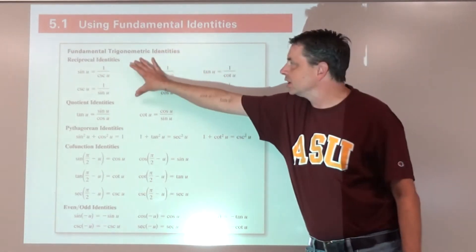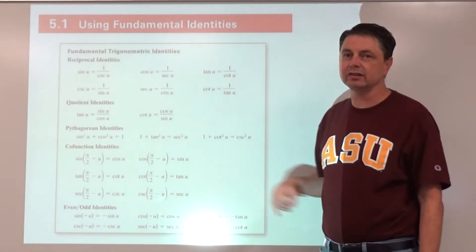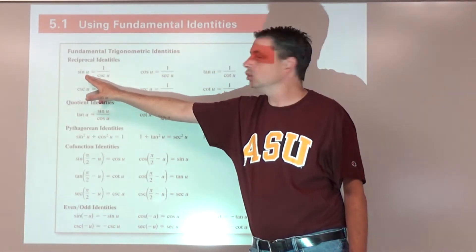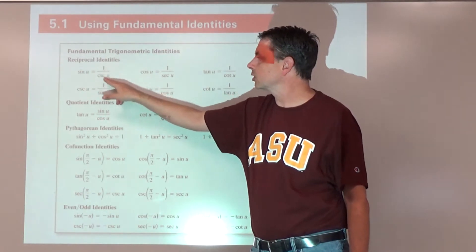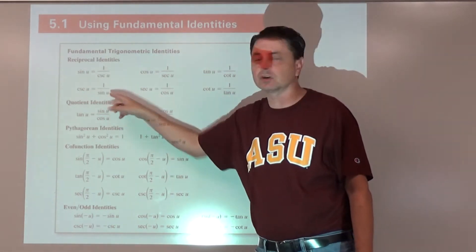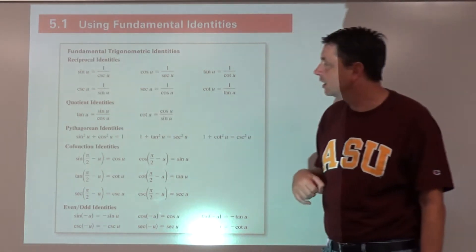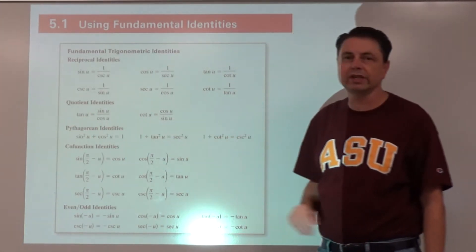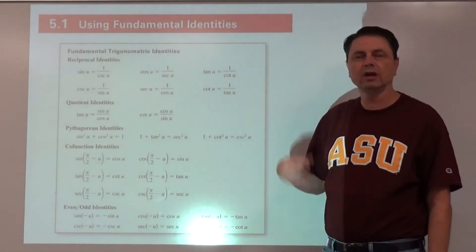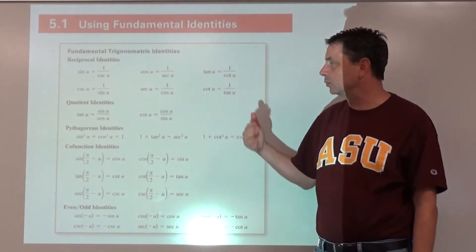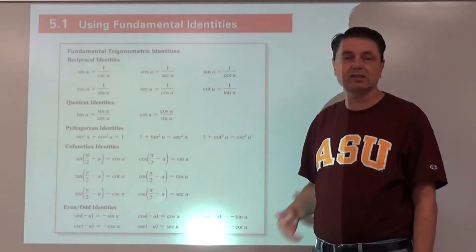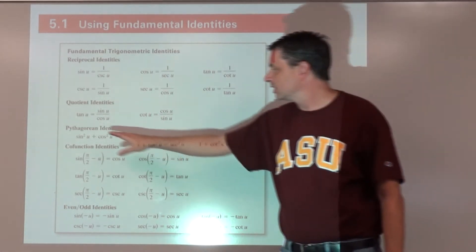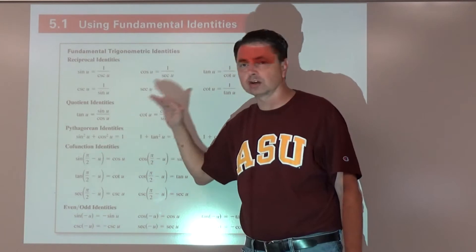We have the reciprocal identities — all six of them — such that sine of u is the reciprocal of cosecant u and vice versa. We have the two quotient identities: one for tangent of u and one for cotangent of u. Remember, the u is just arbitrary — it might be tangent x or tangent theta.